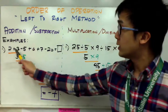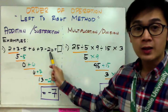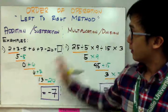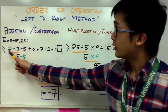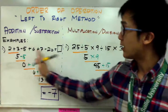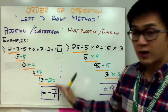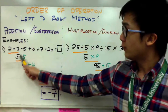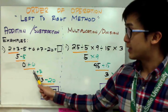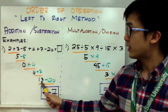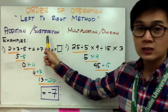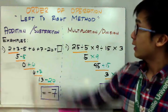For example number one, I have 2+3-5+6+7-20. The operations in problem number one are only addition and subtraction, so the left-to-right method will work. Starting from the left: 2+3=5, then 5-5=0, then 0+6=6, then 6+7=13, and 13-20=-7. This is correct because with only addition and subtraction, the left-to-right method is the correct order of operation.